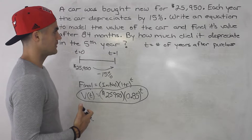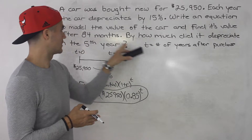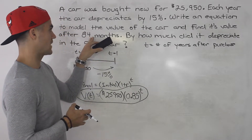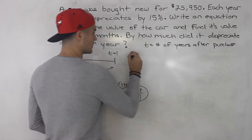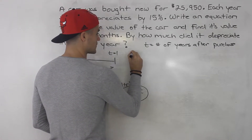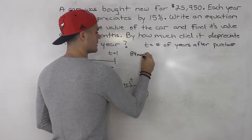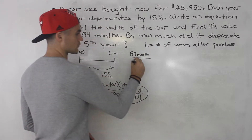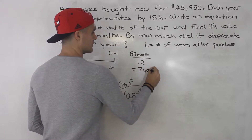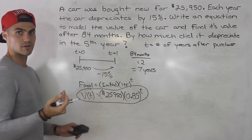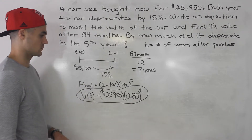The problem here is that our t-value is in years, but they're asking for the value after months. We have to convert those months to years. 84 months divided by 12 months per year gives us 7 years. So 84 months and 7 years are the same thing.